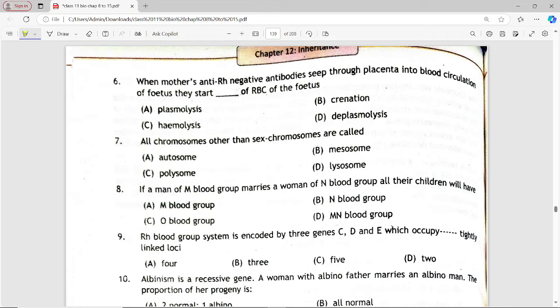Next MCQ is: All chromosomes other than sex chromosomes are called? Options are: autosomes, mesosomes, polysomes, lysosomes. Answer is option A, autosomes.